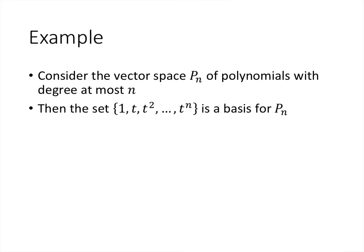As another example, consider the vector space of polynomials with degree at most n — polynomials of degree n or less. The set {1, t, t², …, tⁿ} is a basis for Pₙ. It is linearly independent because no linear combination of these vectors equals zero without all coefficients being zero, and it spans Pₙ because any element of Pₙ can be expressed as a linear combination of these vectors.